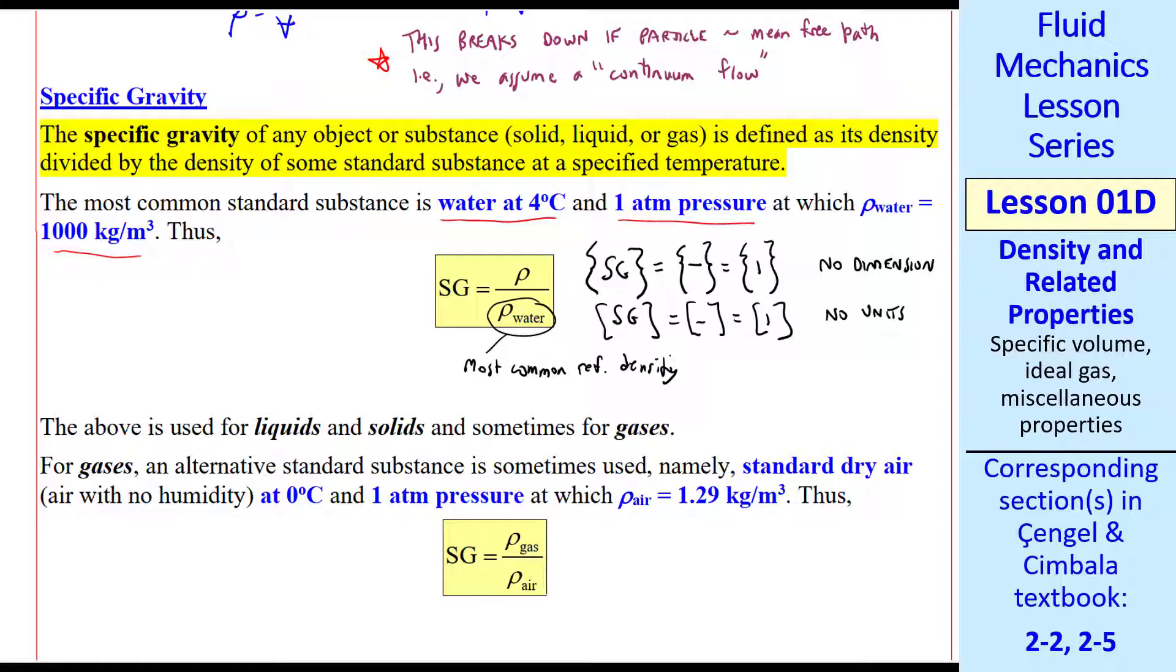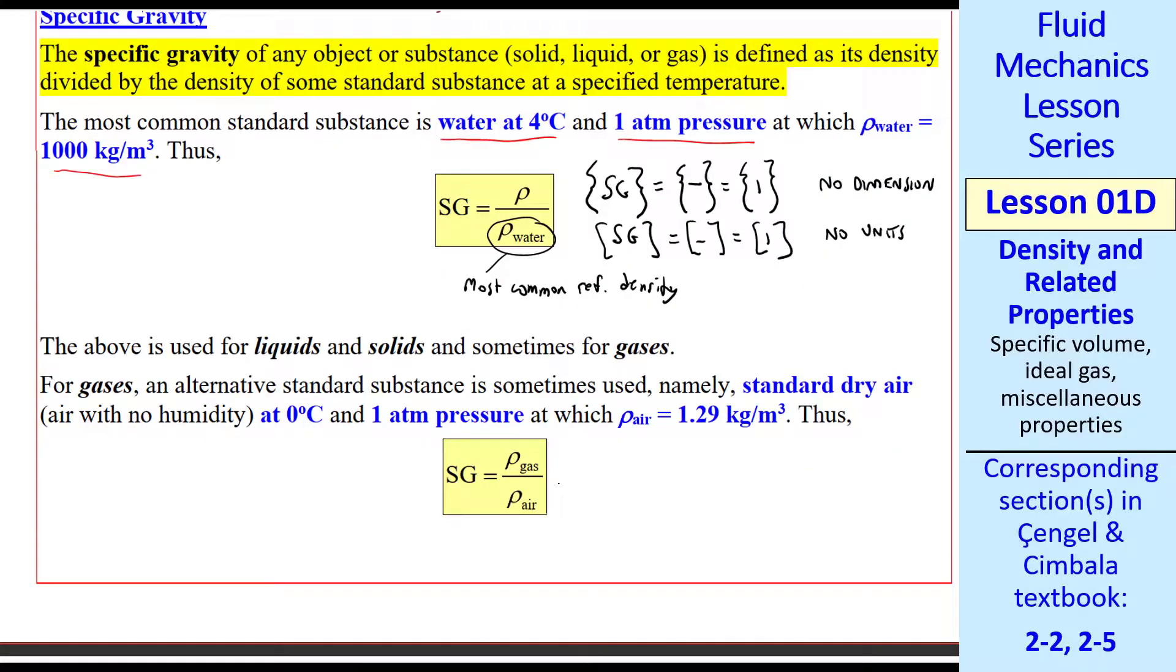This density of water is the most common reference density, and it's used for liquids, solids, and sometimes even for gases. But for gases, an alternative standard substance is sometimes used. Standard dry air, that means air with no humidity, at 0 degrees and 1 atmospheric pressure, where the density is 1.29 kg per meter cubed.